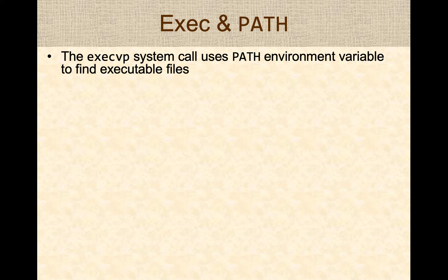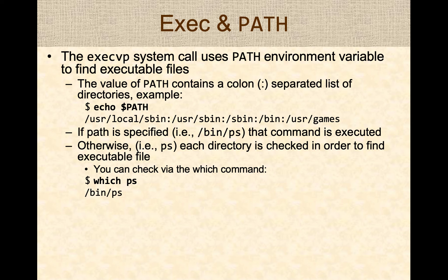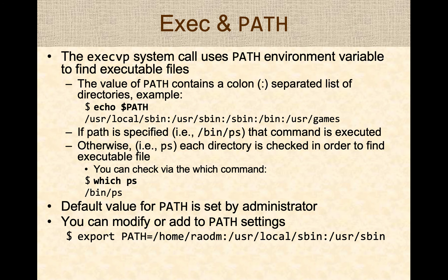The execvp system call uses what's known as the PATH environment variable to find which executable or program you want to run. You can look at the default path setting in a bash shell by typing the command echo $PATH, and you will see the default path where each directory is separated by a colon character. When you're running a command and don't specify an absolute path, the PATH is checked to see which directory contains the specified command and it runs the command from the first directory in which it finds it. The default path is set by the administrator, and you can modify or add to the path using the export command in bash.